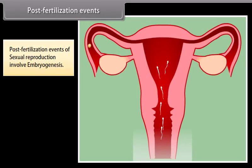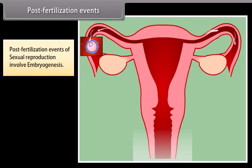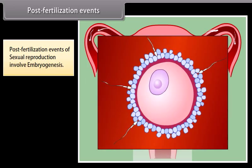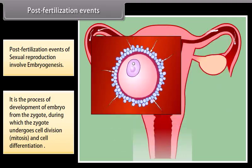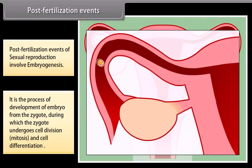Post-fertilization events of sexual reproduction involve embryogenesis, which is the process of development of an embryo from the zygote, during which the zygote undergoes cell division, mitosis, and cell differentiation, as shown in the diagram.